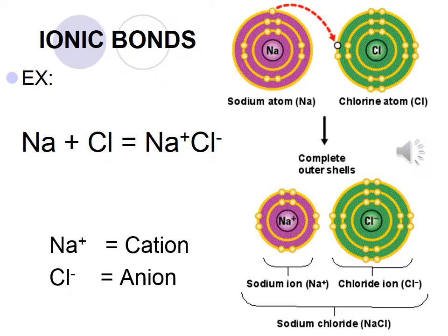Another common example is sodium chloride. Sodium is in group 1A — it gives an electron to chlorine. Chlorine is in group 7A, so it's going to have a negative charge and take that electron from sodium. This is another example of an ionic bond.